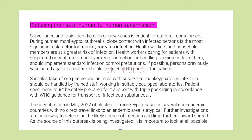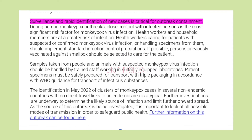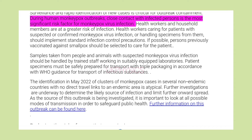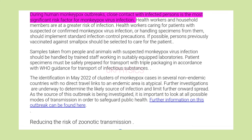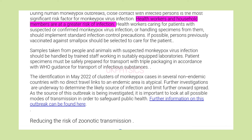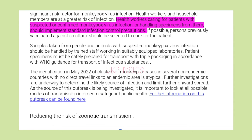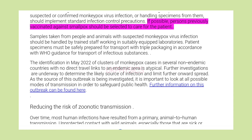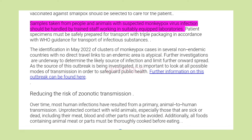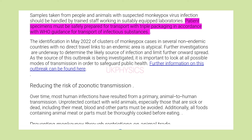Reducing the risk of human-to-human transmission: Surveillance and rapid identification of new cases is critical for outbreak containment. During human monkeypox outbreaks, close contact with infected persons is the most significant risk factor for monkeypox virus infection. Health workers and household members are at a greater risk of infection. Health workers caring for patients with suspected or confirmed monkeypox virus infection, or handling specimens from them, should implement standard infection control precautions. If possible, persons previously vaccinated against smallpox should be selected to care for the patient. Samples taken from people and animals with suspected monkeypox virus infection should be handled by trained staff working in suitably equipped laboratories. Patient specimens must be safely prepared for transport with triple packaging in accordance with WHO guidance for transport of infectious substances.